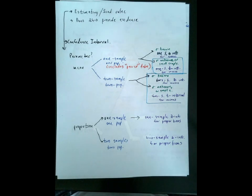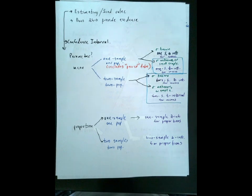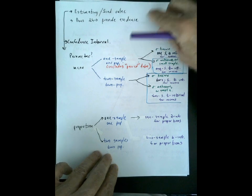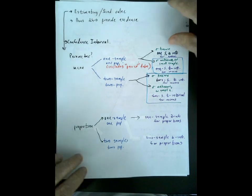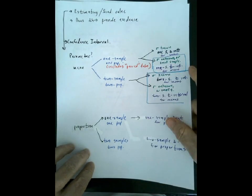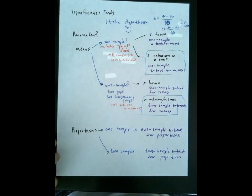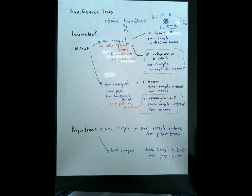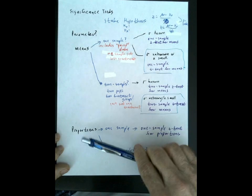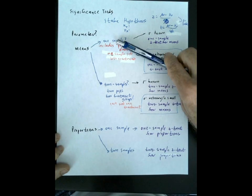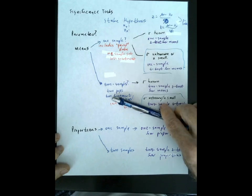Keep in mind these aren't all totally different from each other — it really comes down to: mean or proportion, one sample or two sample. That covers confidence intervals. Now, what if you decide you're supposed to do a significance test — determining if there's enough evidence to draw a conclusion? It breaks down the same way: significance test about a mean or about a proportion, one sample or two sample.